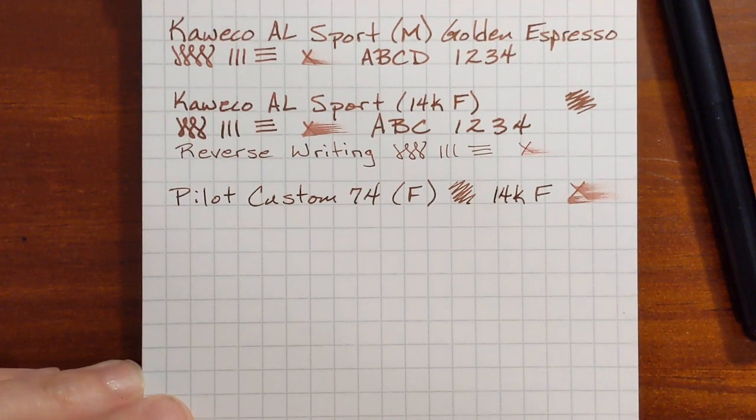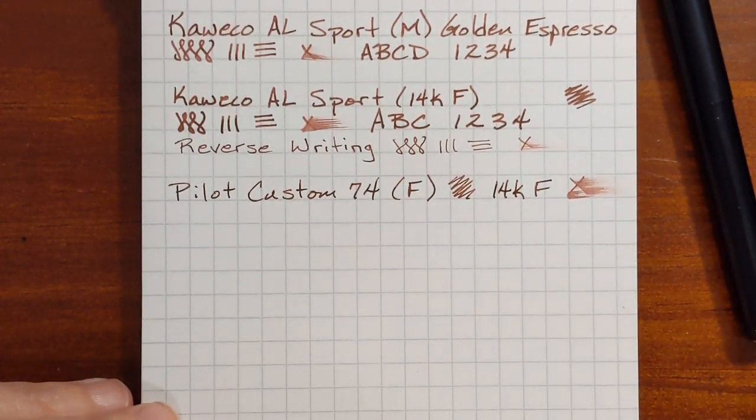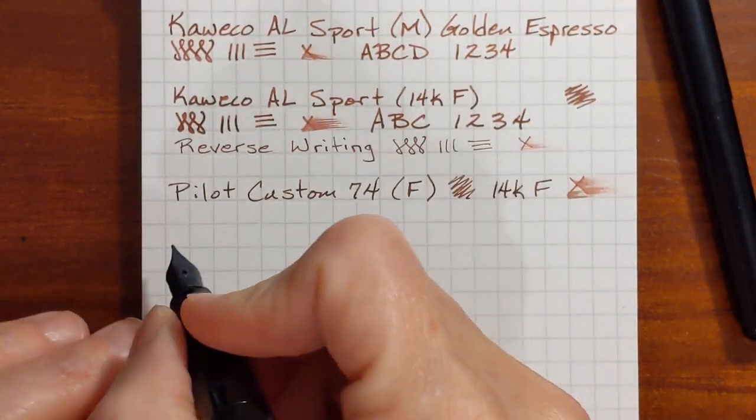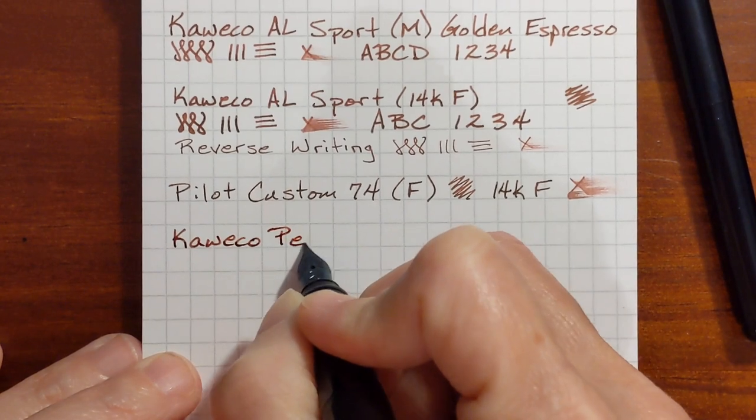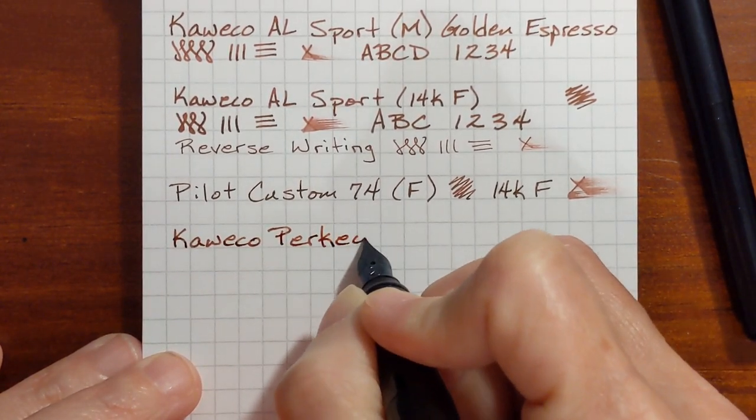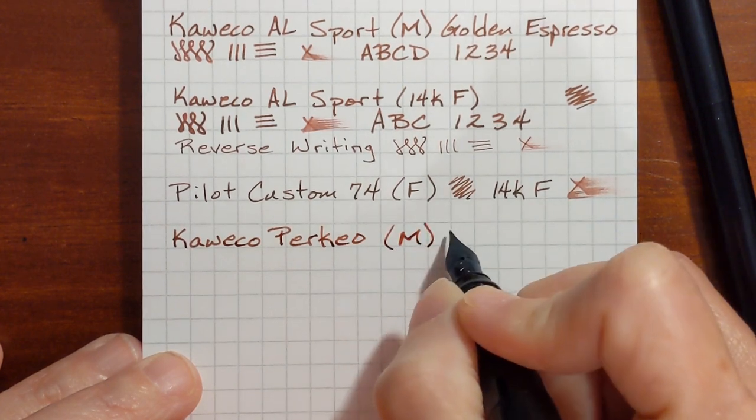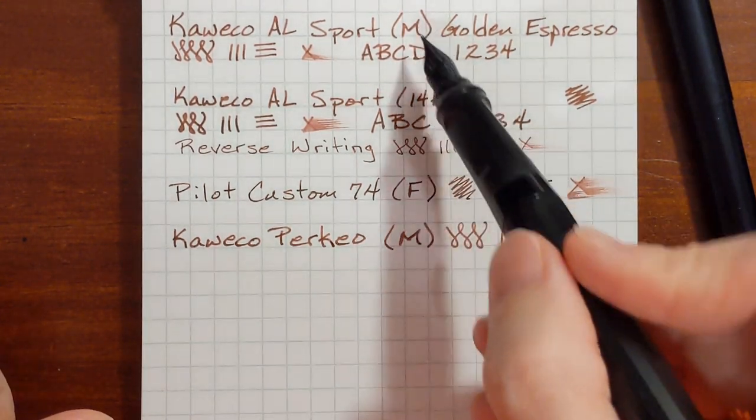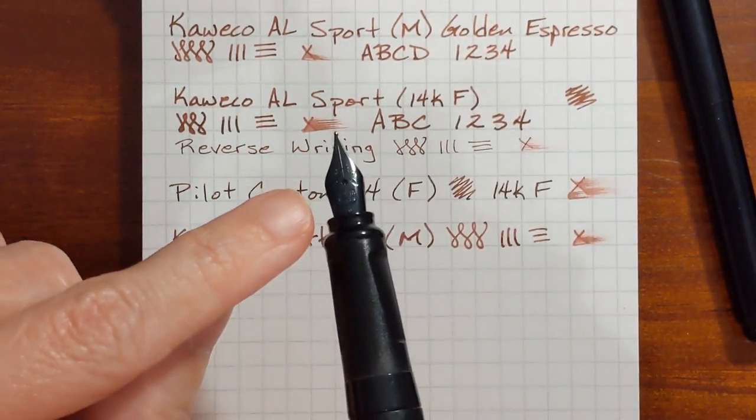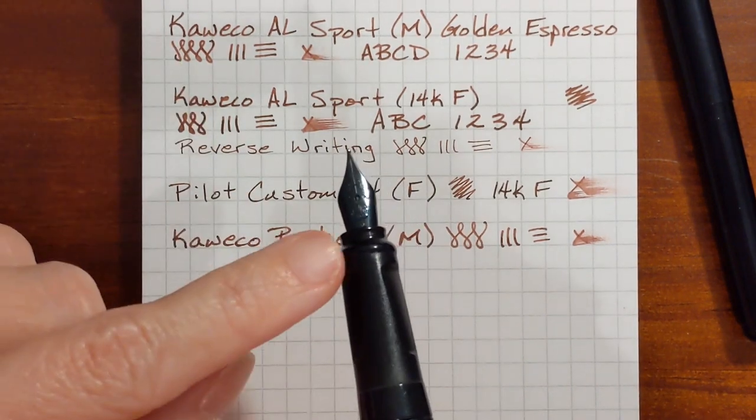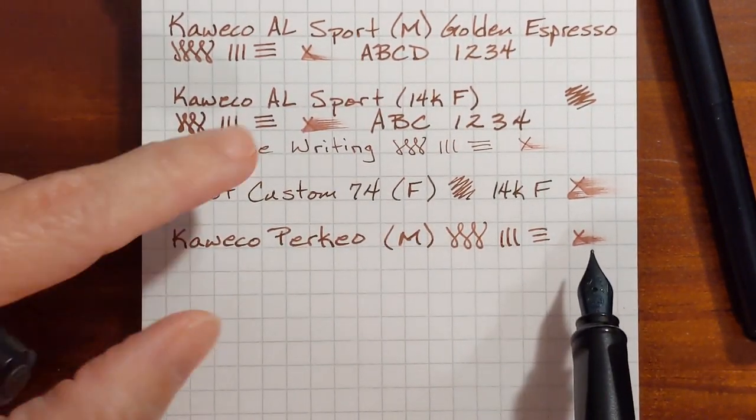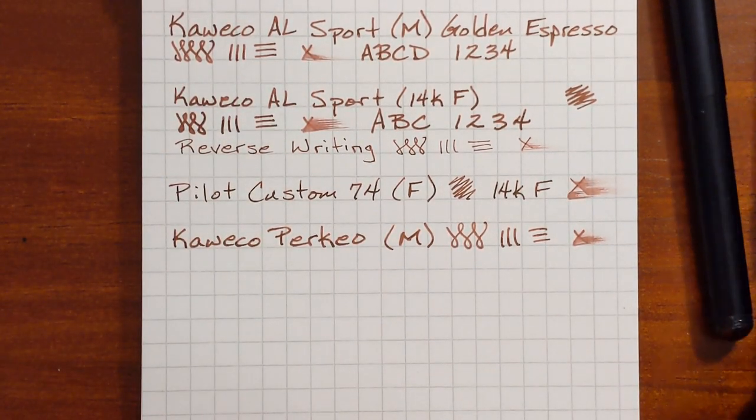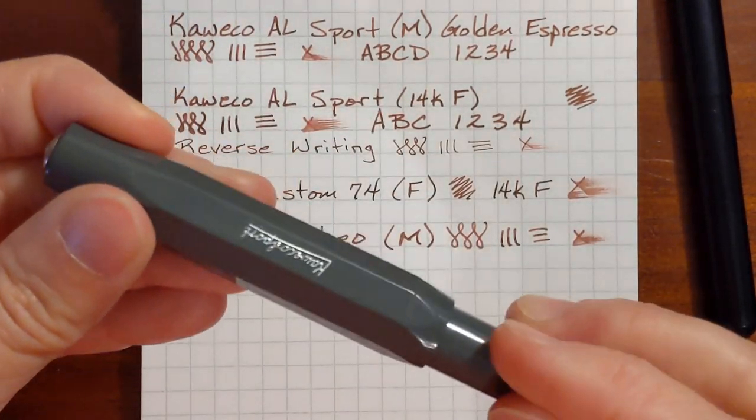All right let's compare this to the other Kaweco nibs. I've got my Kaweco Perkeo with a medium in. I always like this pen for testing inks. All right they're close, the two mediums. This is a different style of nib but it's not interchangeable with the Kaweco sport but they write similarly, similar amount of ink being put down. Next I've got my Skyline sport with an extra fine in.